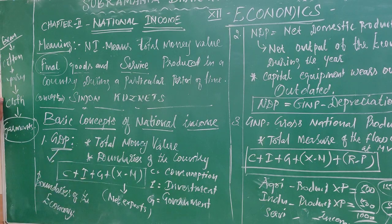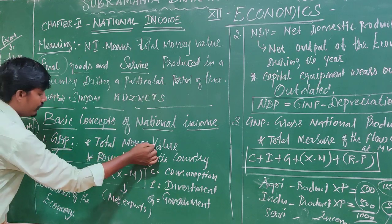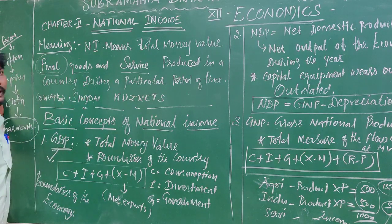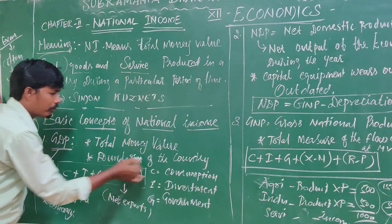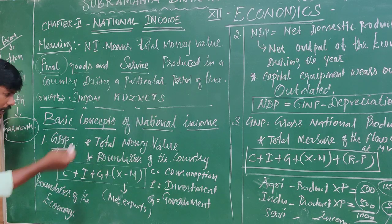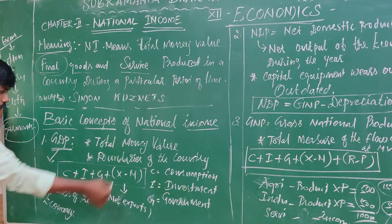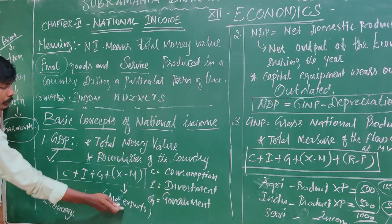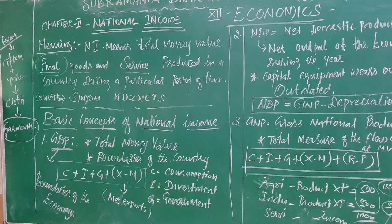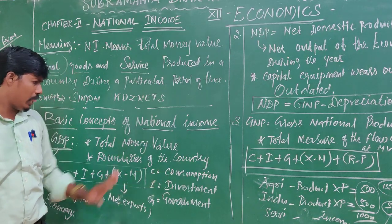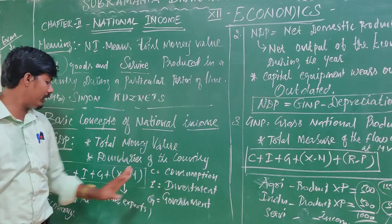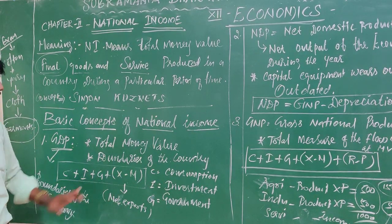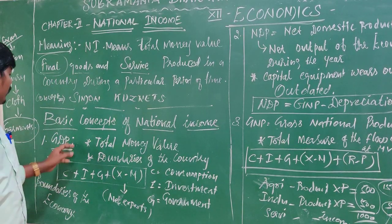First one: GDP — Gross Domestic Product. GDP is the total money value of goods and services produced within the boundary of a country during a particular time. What is meant by domestic? Domestic means 100% within the boundary of the economy. The formula is: C plus I plus G plus (X minus M), where C is consumption, I is investment, G is government expenditure, X is export, and M is import — that is net export.